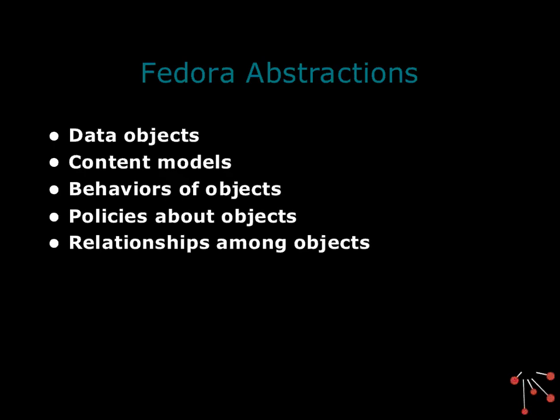The basic abstractions we're talking about are: data objects, which I've already started discussing; content models, which are class mechanisms so you can talk about the rules and characteristics of a whole class of data objects; behaviors of objects, which are the views and different transformations of the underlying content; policies about objects, which are formal policies about things like access control; and the formalized relationships among objects. With those five things, the Fedora software gives you a whole array of possibilities.